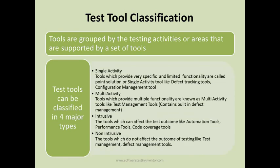The four types are: single activity, multi-activity, intrusive, and non-intrusive. Single activity tools provide very specific and limited functionality — a single-point solution. For example, defect tracking tools like Bugzilla or Mantis are solely for defect tracking and do not support any other functionality.